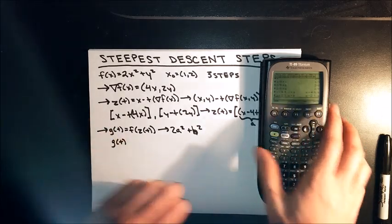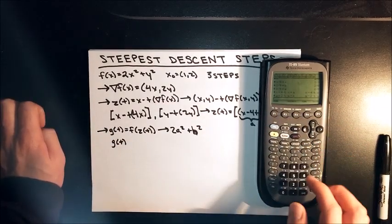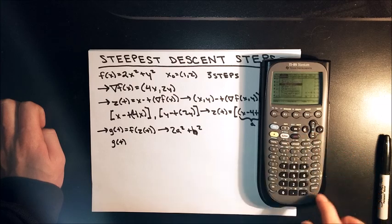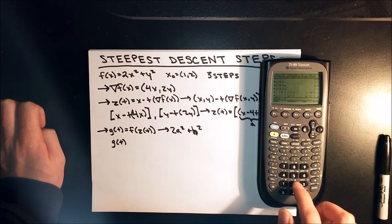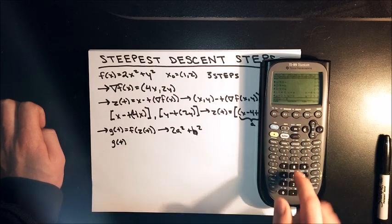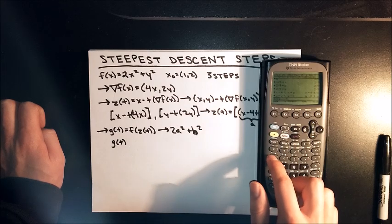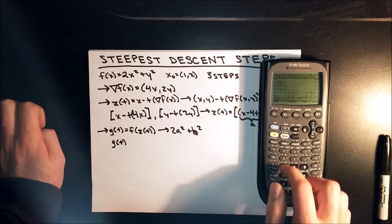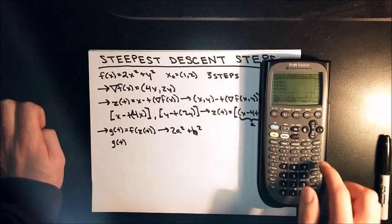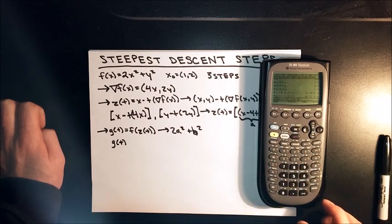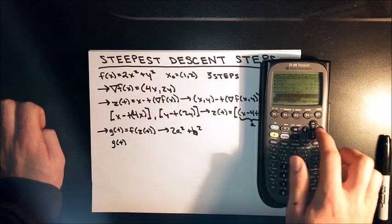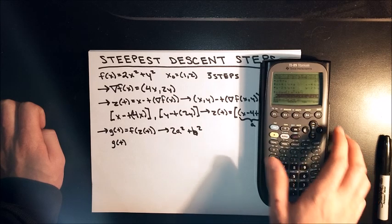Since I have a and b stored, I can just go F2 expand. I'm going to go 2a squared plus b squared. And here's our expanded out equation.